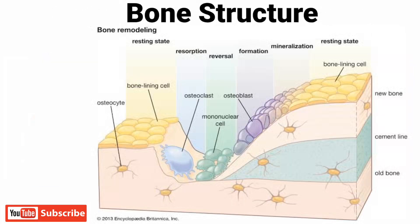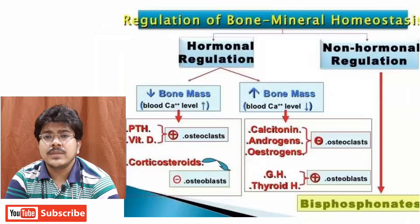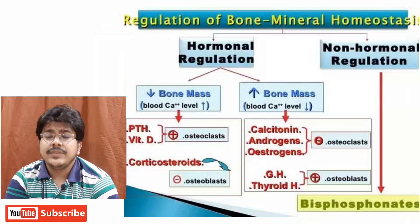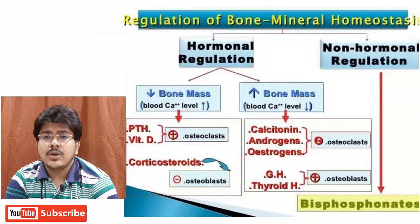Bone is comprised of mainly three cells: Osteoblasts, which are responsible for formation of bone; Osteoclasts, which are responsible for resorption of bone; and Osteocytes, which are mature bone cells. Now, parathyroid hormone and vitamin D increase osteoclastic activity, thereby increasing osteoporosis.